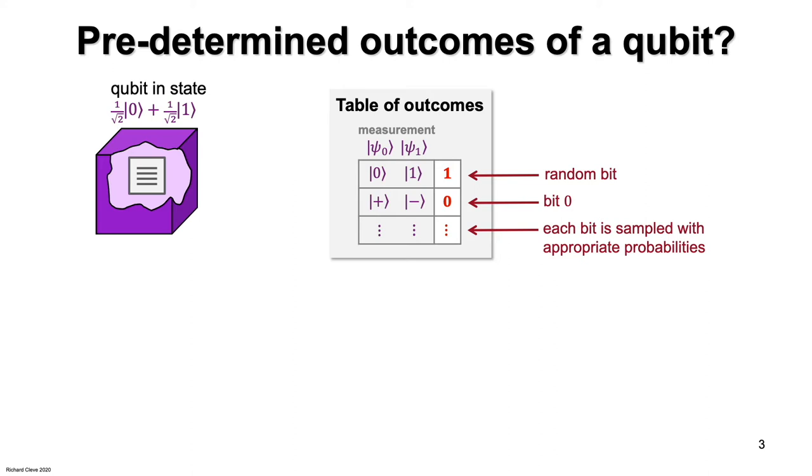Maybe there's a compressed way of containing this information. But let's not concern ourselves with that issue. My point is that it's conceivable that the particle contains this table of predetermined measurement outcomes stored within it.